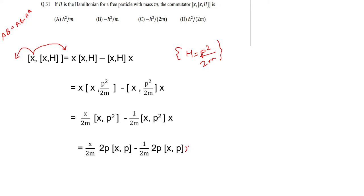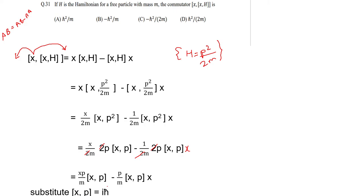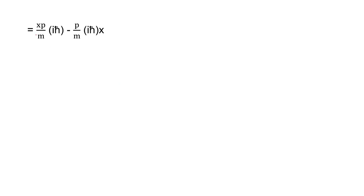The 2s cancel from both terms, so what remains is: (xp/m)[x, p] − (p/m)x[x, p]. Now we substitute [x, p] = iℏ — this ℏ is Planck's constant, or h-bar. So wherever I have [x, p], I write iℏ. We get: (xp/m)(iℏ) − (p/m)(iℏ)x.